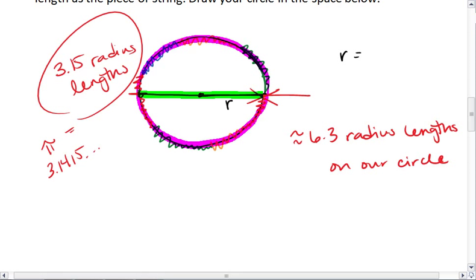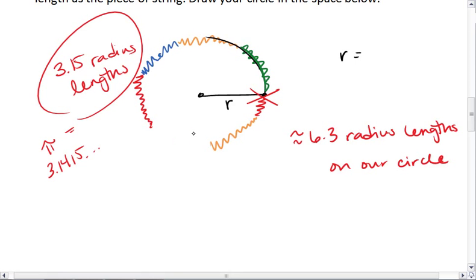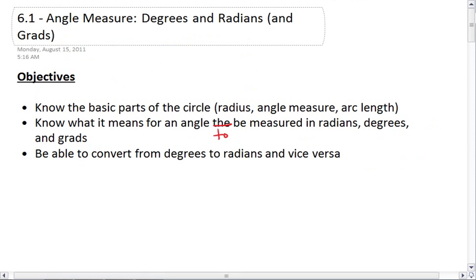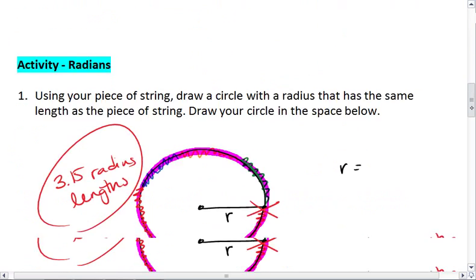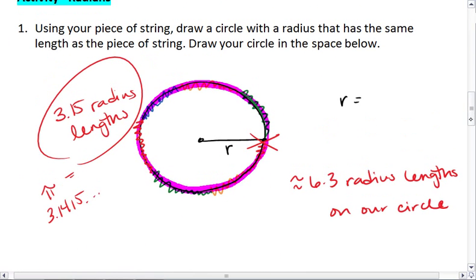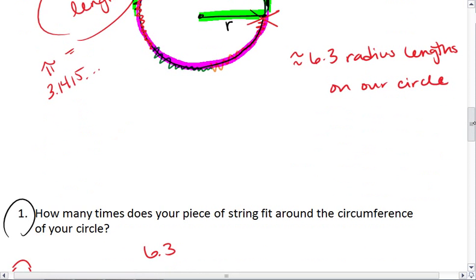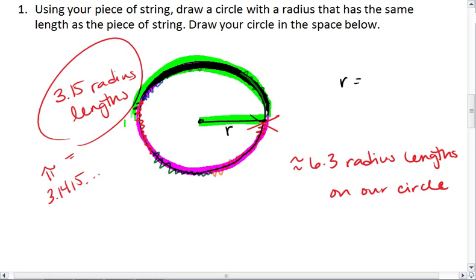Which means half the diameter, which is our radius, is in that same ratio to half of the circle. Meaning, pi radius lengths will fit around half of my circle.